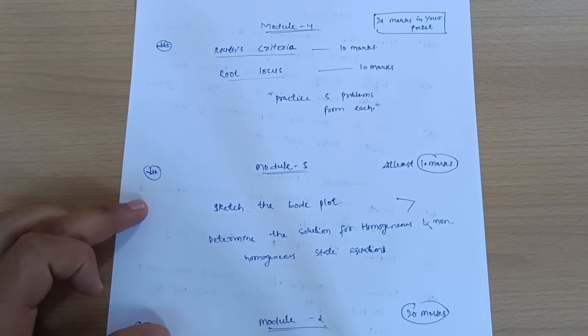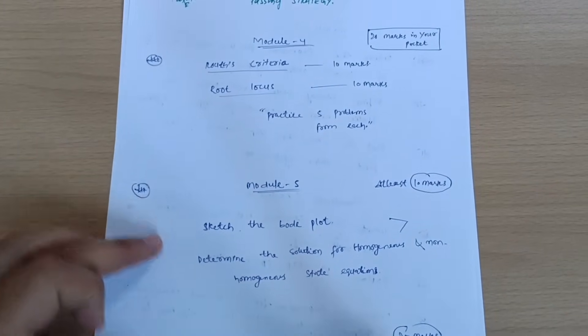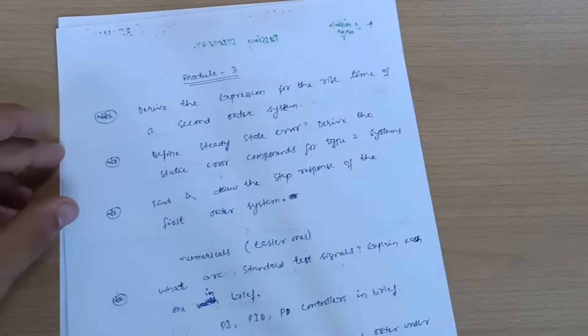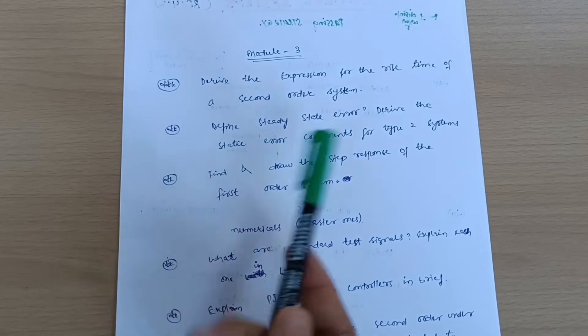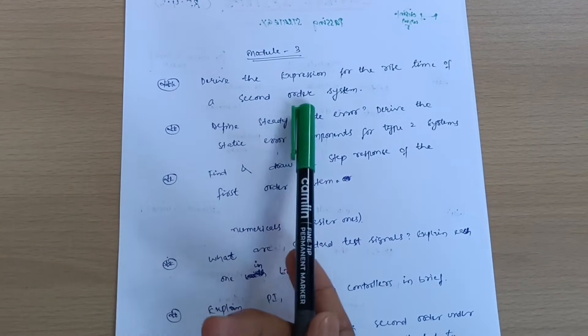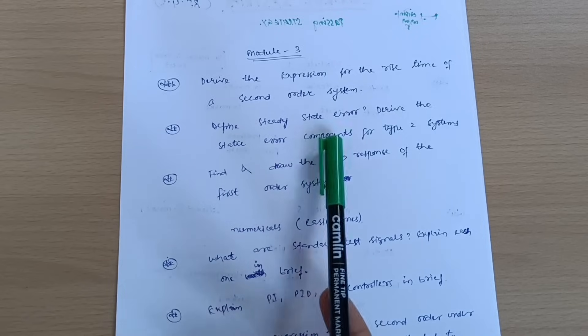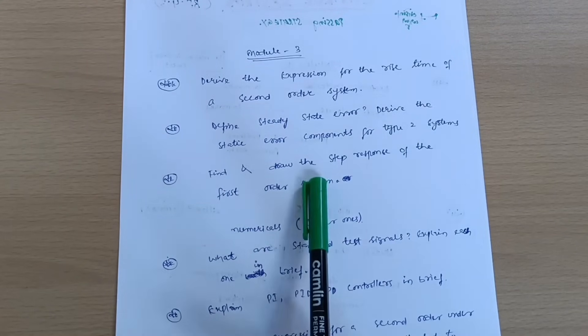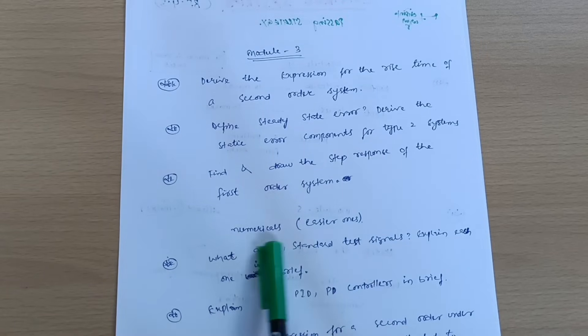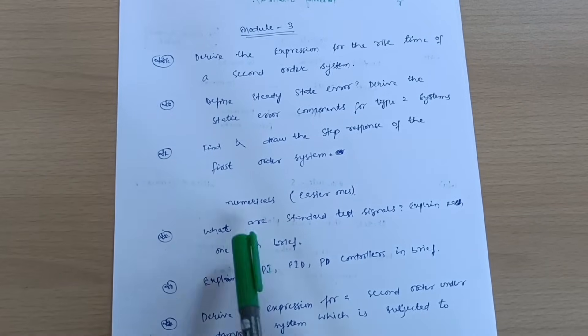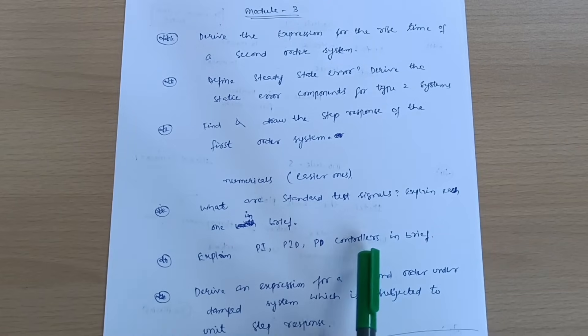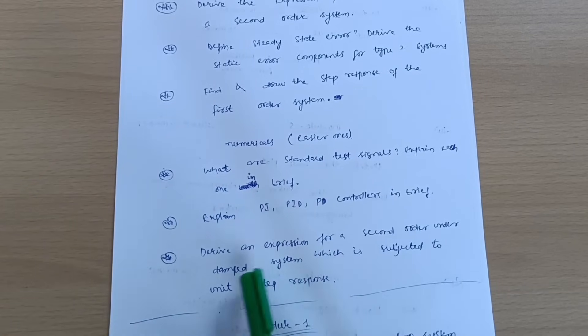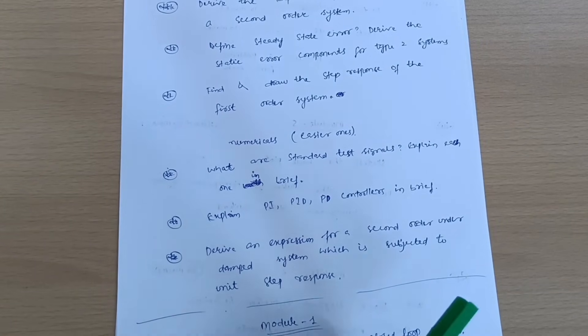If you just cover these portions whatever I have mentioned, this becomes your 50 marks from three modules. Let's come to Module 3 where you have to prepare some derivation part. I will provide the solutions. Derive the expression for the rise time of a second order system. Define steady state error. Derive the static error components for Type 2 systems. Find and draw the step response of the first order system and the numericals which are very easy ones which I will also provide in the description. What are standard test signals? Explain each one in brief. Explain PI, PID, PD controllers in brief and derive an expression for second order underdamped system which is subjected to unit step response. This is all about Module 3.